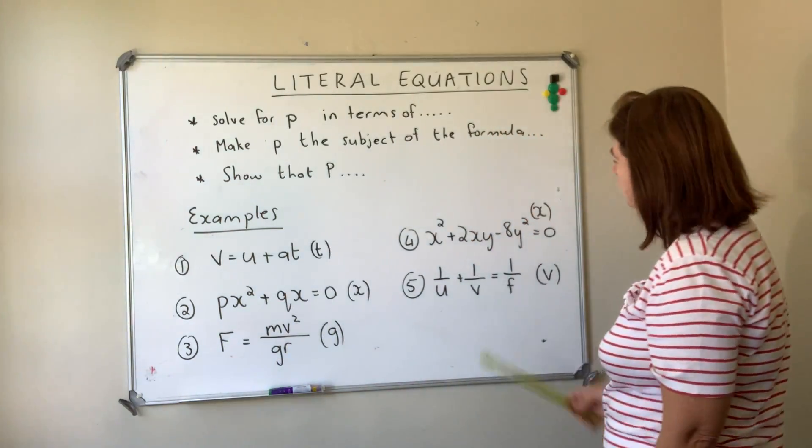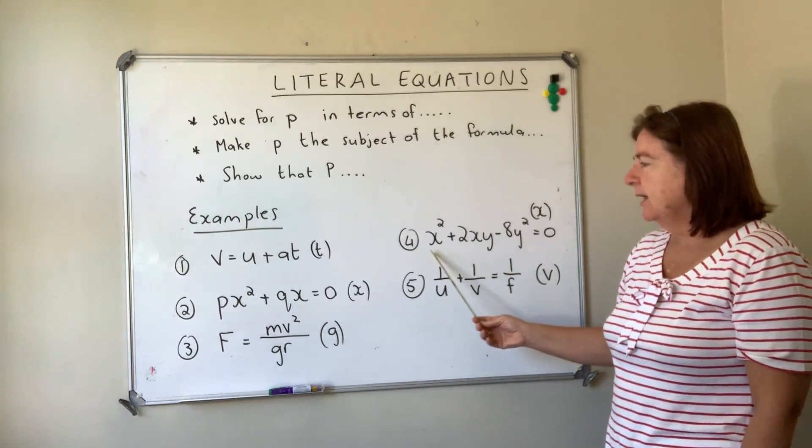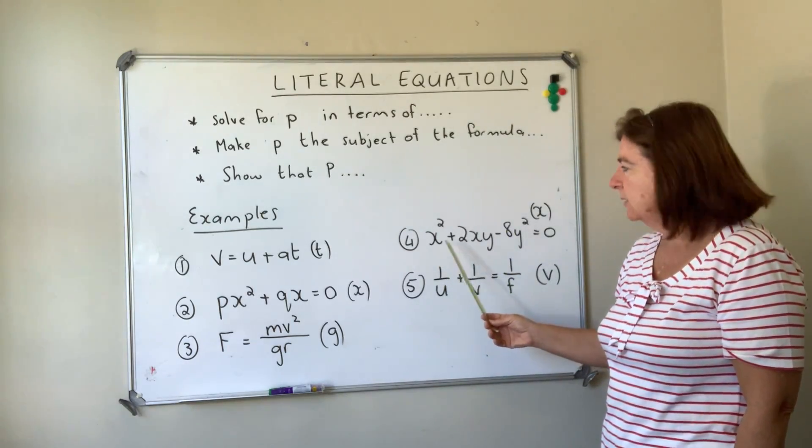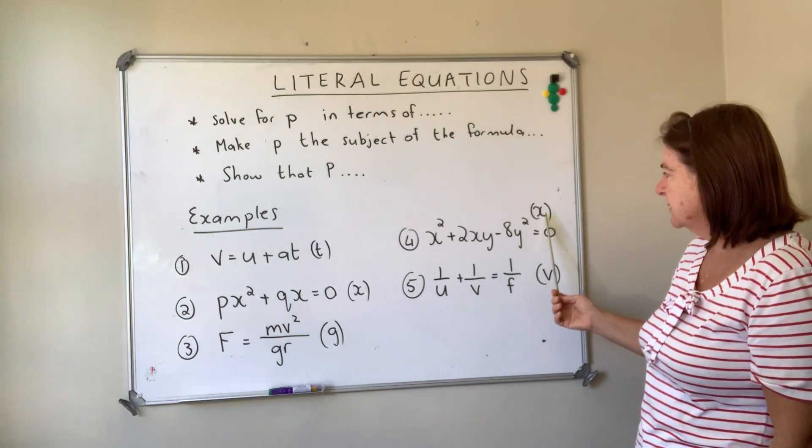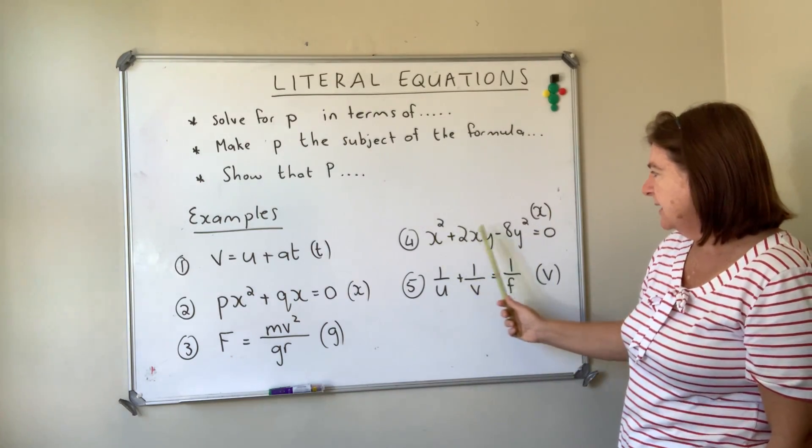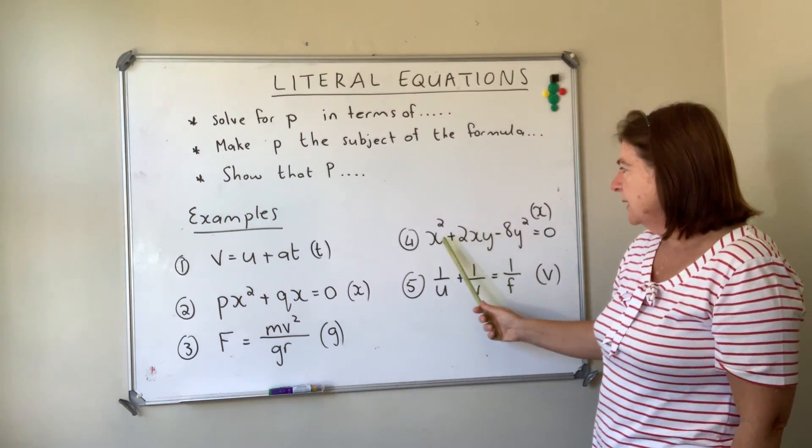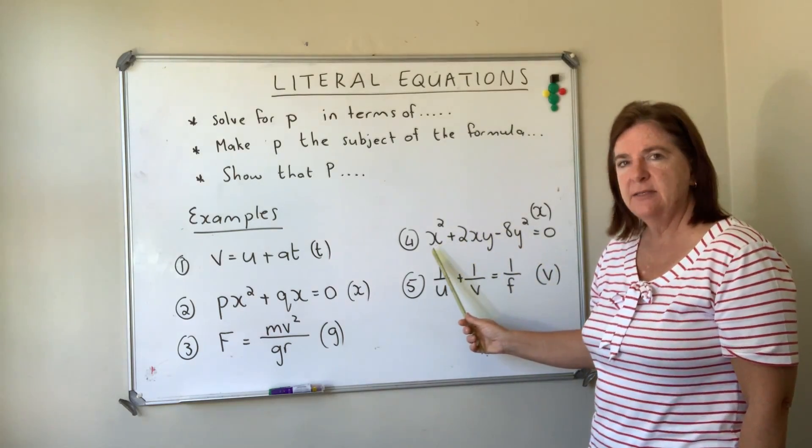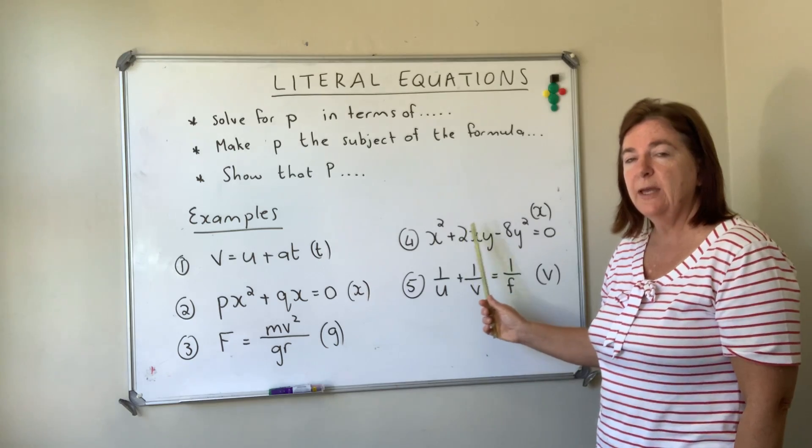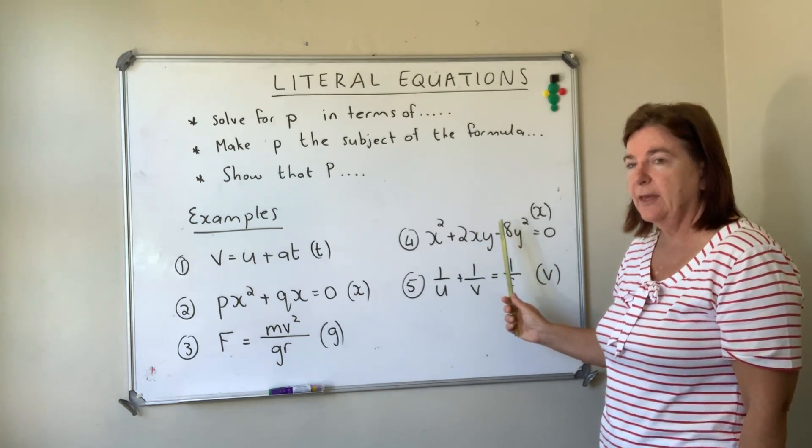Number four, here we've got a trinomial, one, two, three terms, and we need to solve for x. Now x at the moment is there and there and they've also got that. So what we're going to do in this particular case is because it's a trinomial, we're going to factorize the trinomial and then you'll see where we go from there.